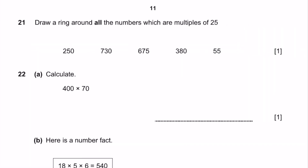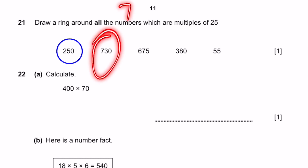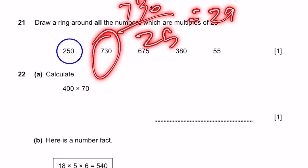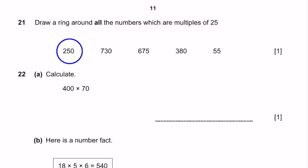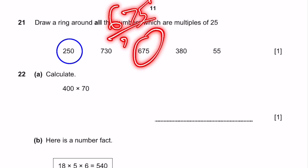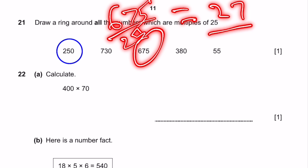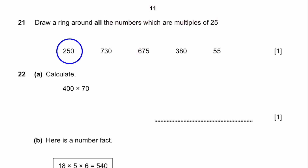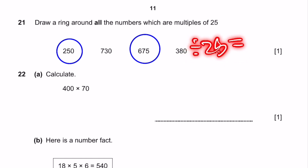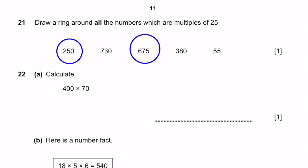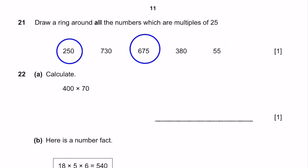Question 21. Circle all the numbers which are multiples of 25. 250 divided by 25 is 10 — circle it. 730 divided by 25 is 29.2, not a whole number — don't circle. 675 divided by 25 is 27, a whole number — circle it. 380 divided by 25 is 15.2 — don't circle. 55 divided by 25 is 2.2 — don't circle.